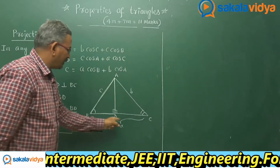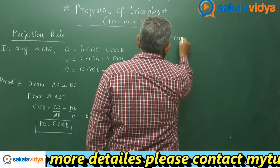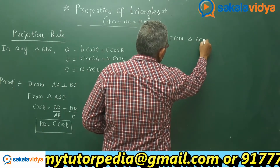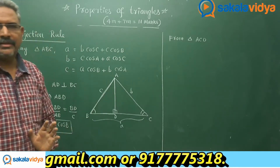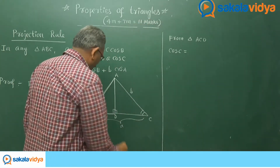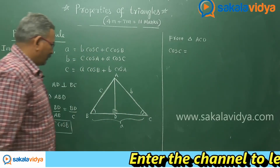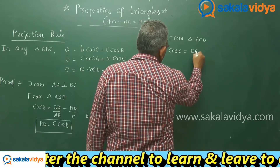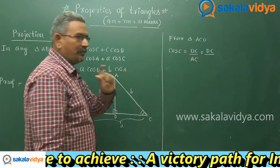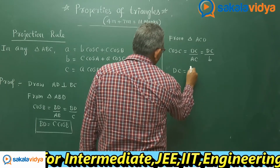In a similar manner, from triangle ACD, let us define cos C. Cos C is equal to the adjacent side DC divided by the hypotenuse AC, which is small b. So DC equals b·cos C.